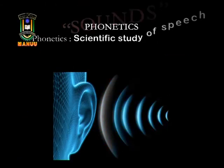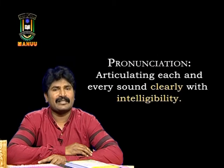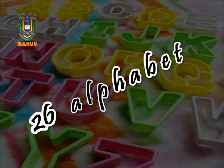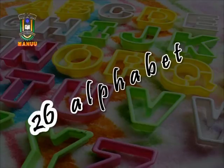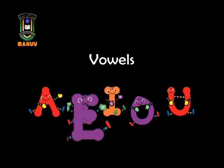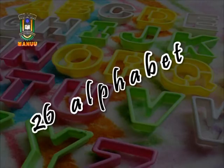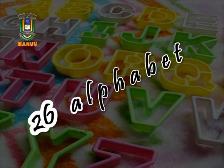Phonetics is the scientific study of speech sounds. Pronunciation is all about articulating each and every sound clearly and with intelligibility. We all know the 26 alphabets — there are five vowels: A, E, I, O, U — and 21 consonants. But English is not like other languages, because those 26 letters represent 44 sounds. That's the reason it is very important to have an idea about pronunciation.